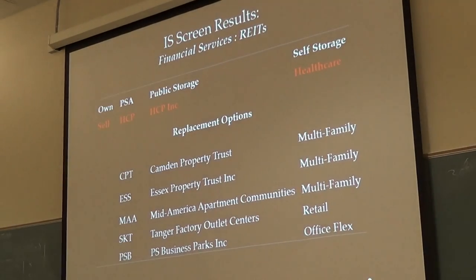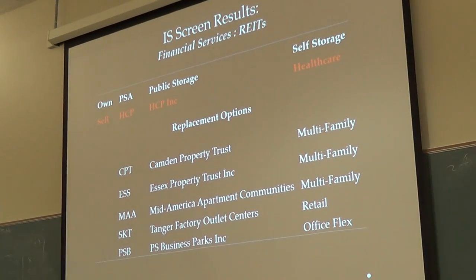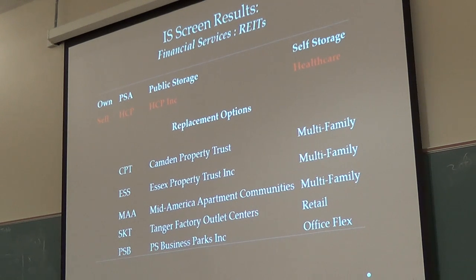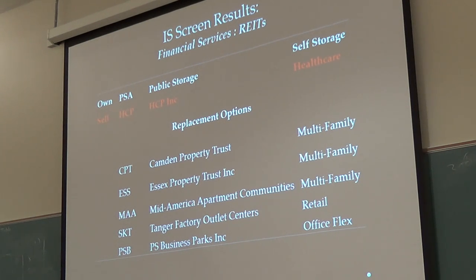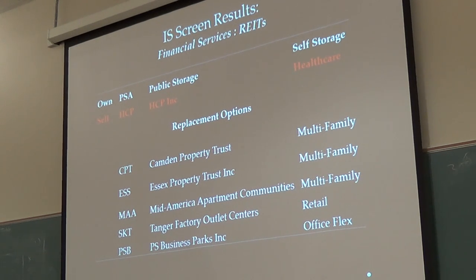As far as the investment society screen goes, we essentially screen for credit scores — making sure they're investment grade — growth metrics, and a couple other characteristics. What we're left with is about 150 companies broken into sectors. These are the results for the real estate investment trust sector. We own Public Storage and it made it through the screen, so we'll continue to own it. We previously owned HCP, a healthcare property REIT, and it did not make it through the screen, so we had to make a trade.